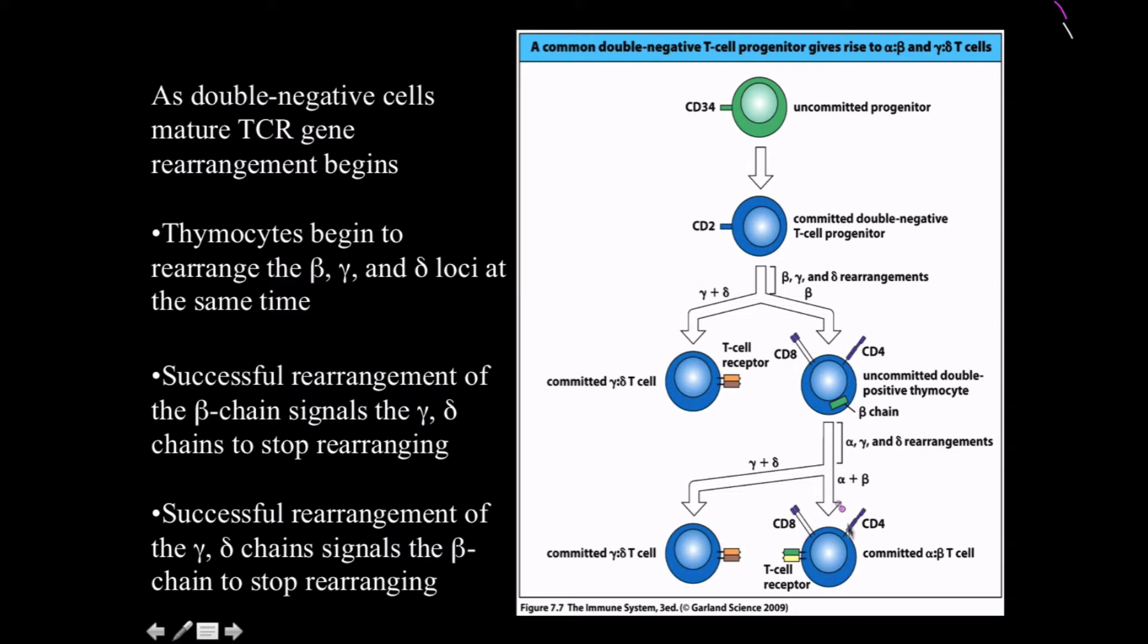If delta-gamma does happen, it becomes a committed T cell to becoming a delta-gamma T cell. It's going to go off into the tissue space and skip the selective processes here. But if alpha wins, which it most likely will, it becomes a double positive T cell or thymocyte, and this is going to undergo selective processes here.